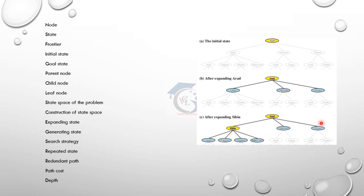The initial state means the starting state. The goal state means we start from a state in any location. If you want to reach the goal, we will get to the goal state.